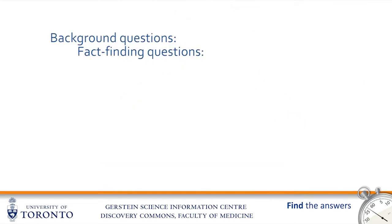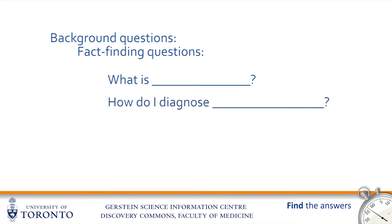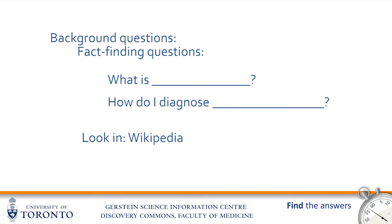Background questions are basic fact-finding ones. What is a certain condition? How do I properly diagnose it? How is it different from a similar disease? You can also think of these as textbook questions. Sometimes Wikipedia is the fastest place to find answers to these questions, but e-texts like Harrison's will often have better information that is written more appropriately for you, the medical student.